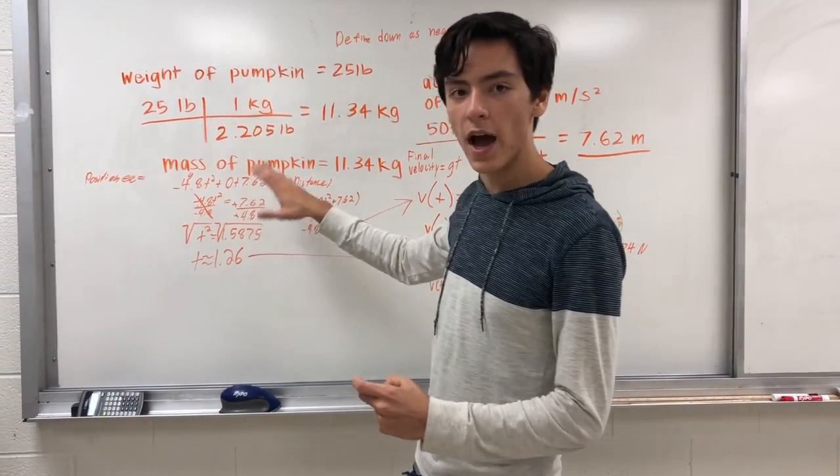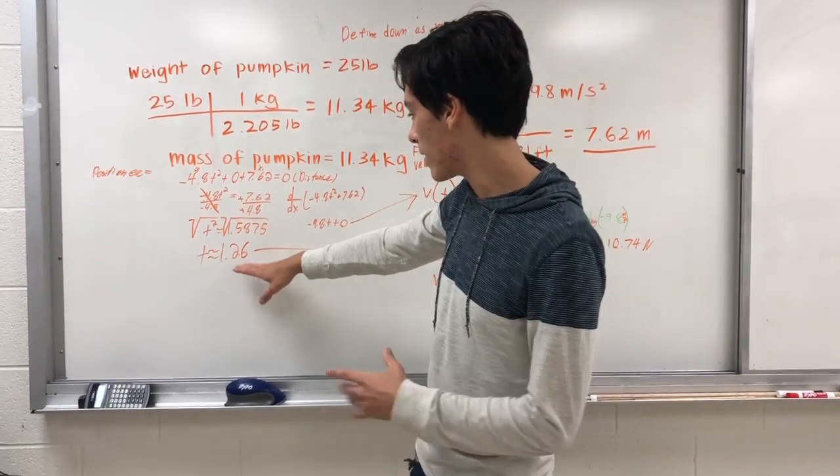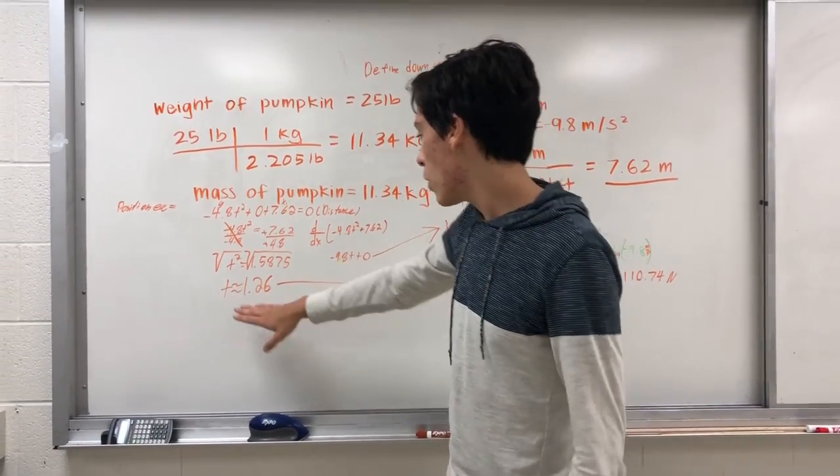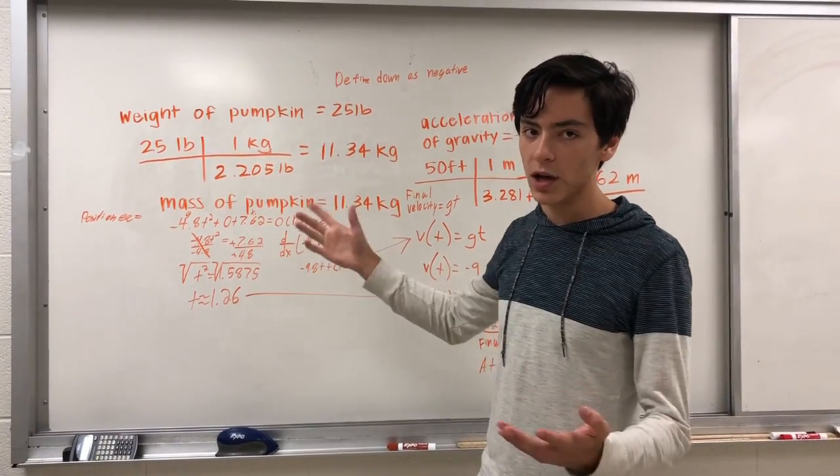Here's us solving for the time it's going to take for the pumpkin to fall 50 feet to the ground. To find what the acceleration would be at the moment of impact, we plug in this time to the derivative of our position equation, which is going to be our velocity equation.